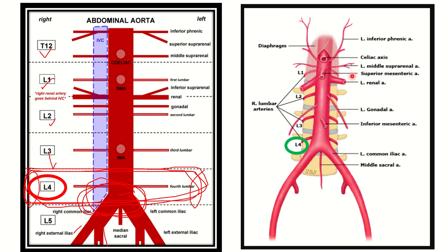In the second picture, we can also see the abdominal aorta giving different branches at different vertebral levels, and finally it bifurcates into the right and left common iliac arteries at the level of the lumbar four vertebra.